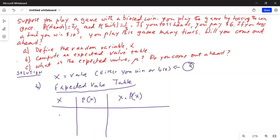So if you toss a head, you are going to lose six dollars, right? And what is the probability of tossing a head is two-thirds. So X times P(X) is minus six times two-thirds, which is minus 12 by 3, is equal to minus 4.